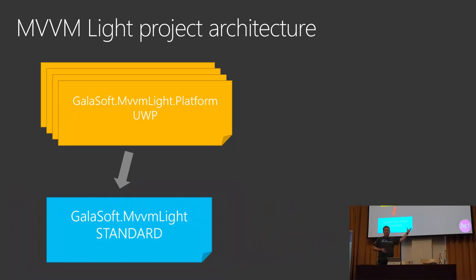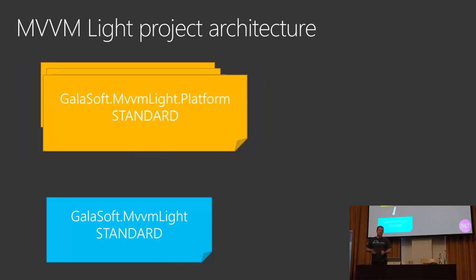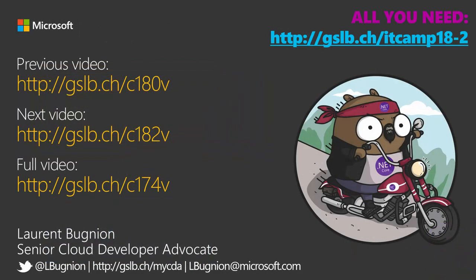Now I see the problem of the platform code. The platform code didn't change at all — it is platform-specific, whether .NET or Xamarin or whatever. But I need to change the reference, so now I have a standard version of the platform taking a reference on the standard version of MVVM Lite. And that's the new architecture we have now.